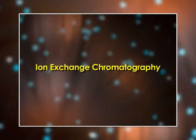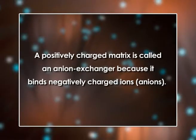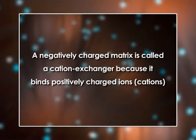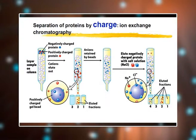Ion exchange chromatography is the most commonly used chromatographic technique for protein separation. A positively charged matrix is called an anion exchanger because it binds negatively charged ions, while a negatively charged matrix is called a cation exchanger because it binds positively charged ions. The buffer conditions are adjusted to favour maximum binding of the protein of interest to the ion exchange column, while contaminating proteins bind less strongly and therefore pass more rapidly through the column.